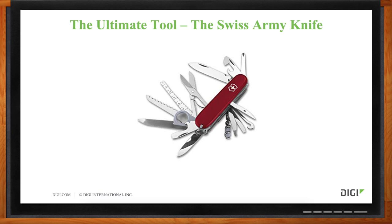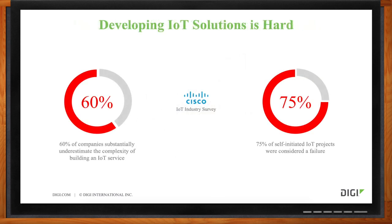It's important to think of the same sort of concept when it comes to picking vendors for any products you're designing into your IoT product. You need to pick a vendor that has a lot of tools in their toolbox to make integrating their product into your product seamless and easy. Why do you need these tools? Developing an IoT solution is extremely difficult. A recent study from Cisco found that 60% of companies substantially underestimate the complexity of building an IoT service.